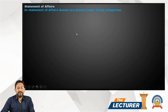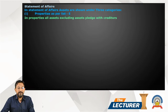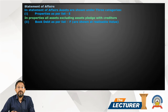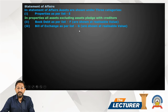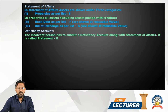In the statement of affairs, assets are shown in three categories: property as per List E — all assets excluding assets pledged with creditors other than secured assets; book debts as per List F, shown at realizable value; and bills of exchange as per List G, shown at realizable value.